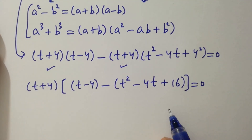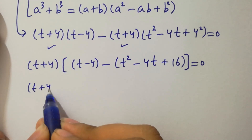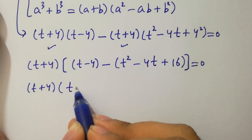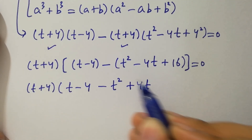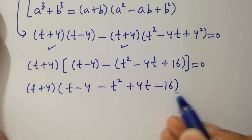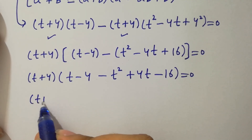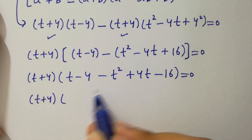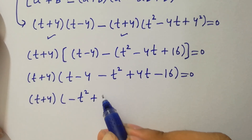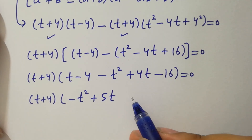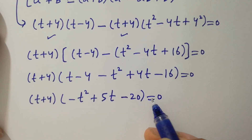Equals 0. Factoring out t plus 4, we collect: t minus 4 minus t squared plus 4t plus t — giving 5t — minus 4 minus 16, giving minus 20. So we have t plus 4 times negative t squared plus 5t minus 20 equals 0.